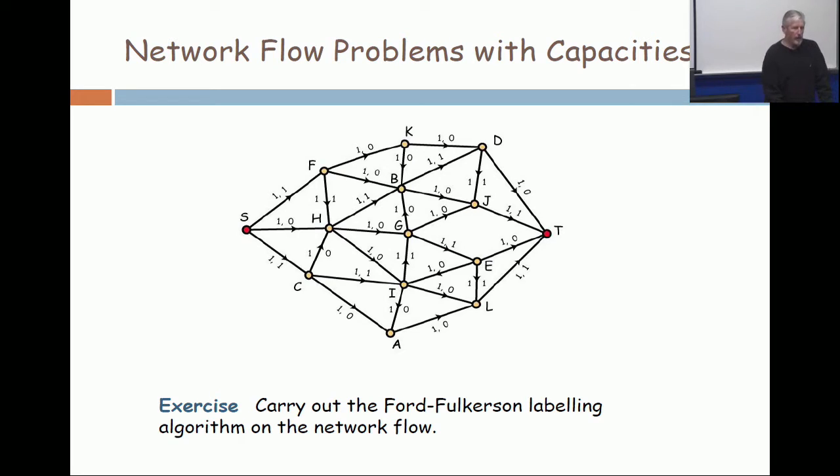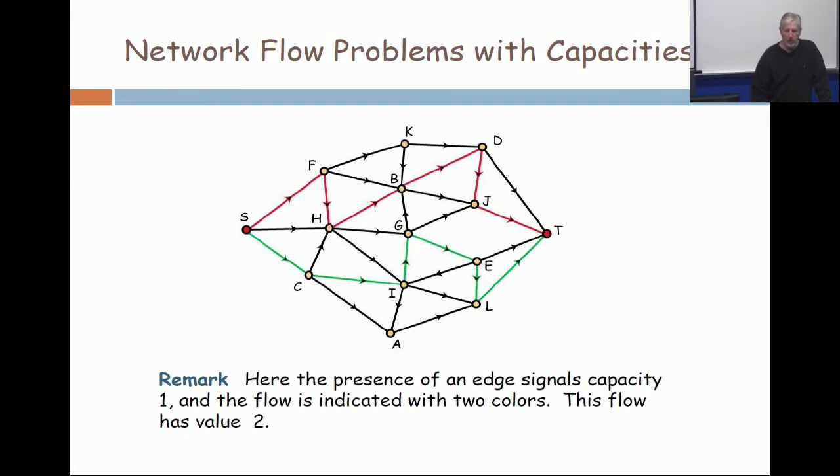When you are working with networks where all edges have capacity one, you don't have to write that on the picture. Just make it a sentence over to the side. In this network, all edges have capacity one. So you can just indicate a flow like this.